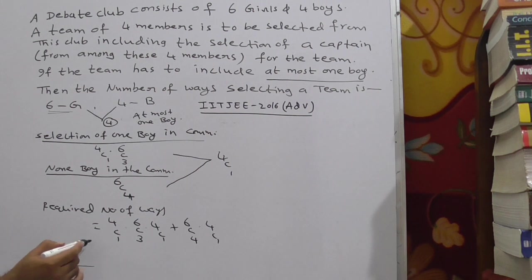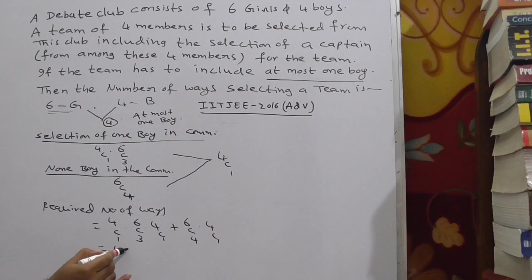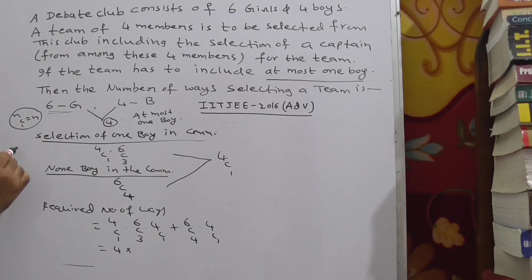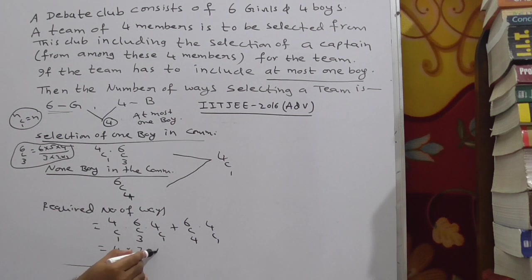What is the 4C1 value? 4C1 value is 4 only. 4C1 is 4 and nC1 is equal to n. Then what is 6C3? Observe here. 6C3 can be written as 6 into 5 into 4 by 3 into 2 into 1. This is the way of calculation of 6C3. So from 6 to 3 numbers. That is 6, 5, 4. So denominator 3, 2, 1. Here 3 into 2, 6, 6 gets cancelled. So you get 20 into 4C1, 4 again. Plus 6C4.